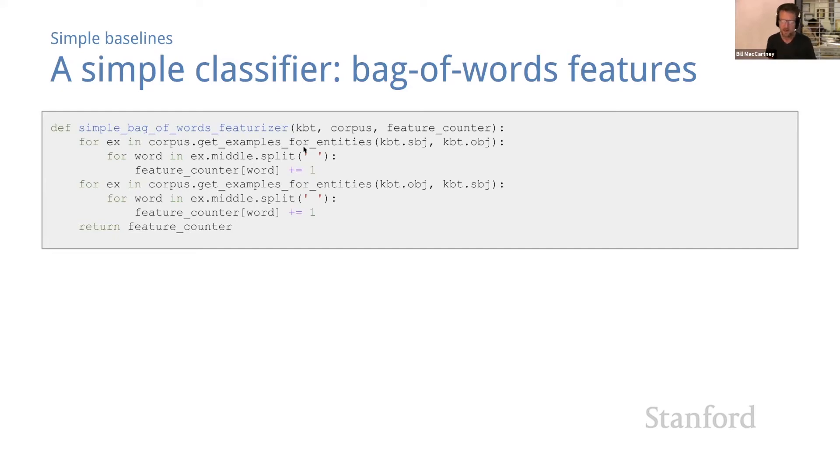The other observation to make here is that we make no distinction between what you might call forward examples, which have subject first and then object, and reverse examples, which have object and then subject. We're lumping them all together. The words that come from the middles of examples in either direction all get lumped together into one feature counter, and you might have qualms about whether that's really the smartest thing to do.